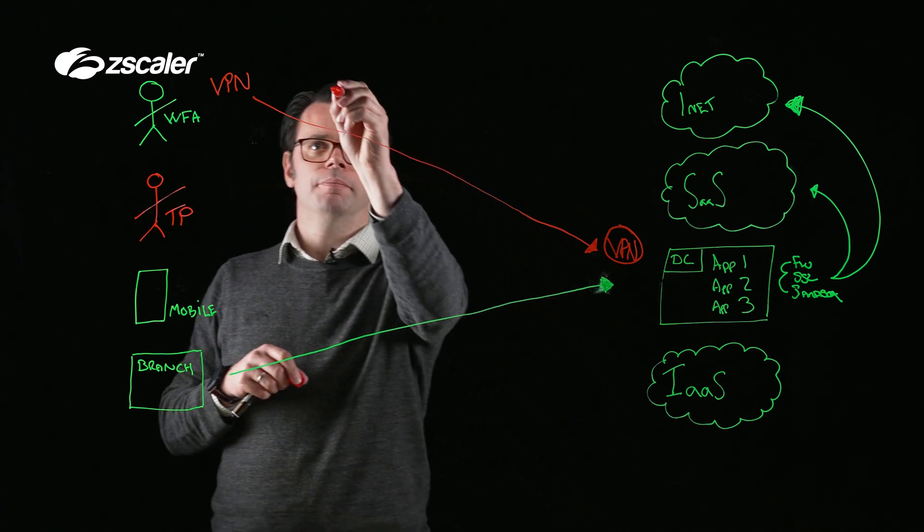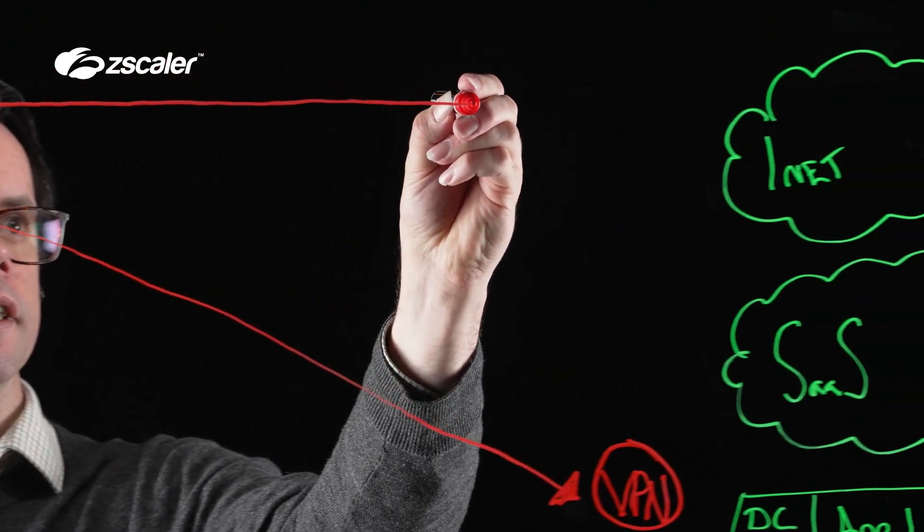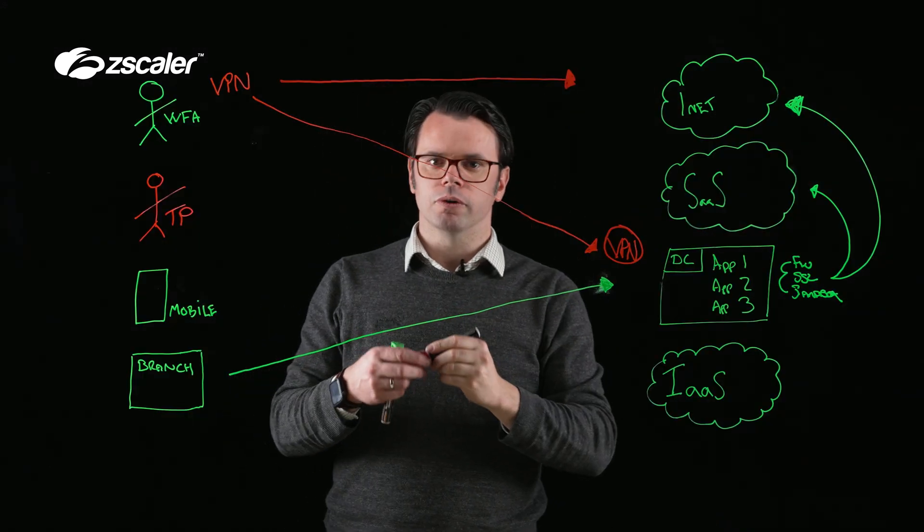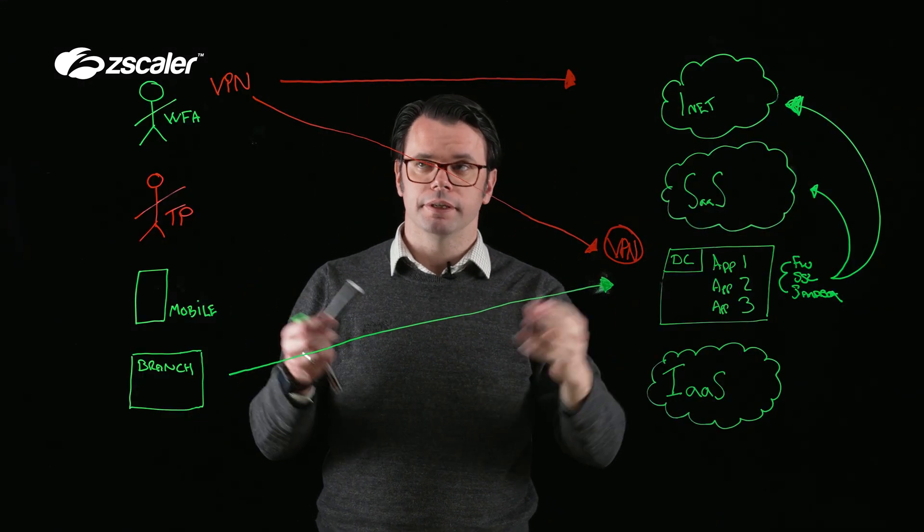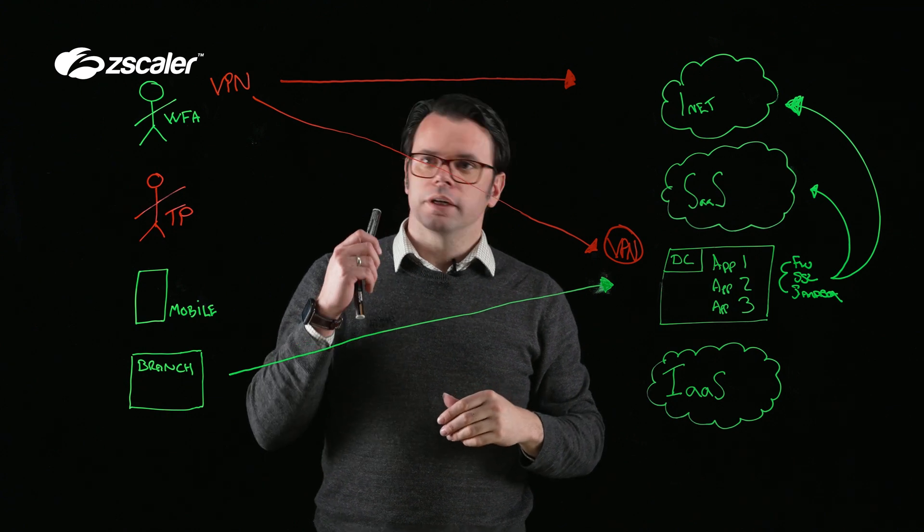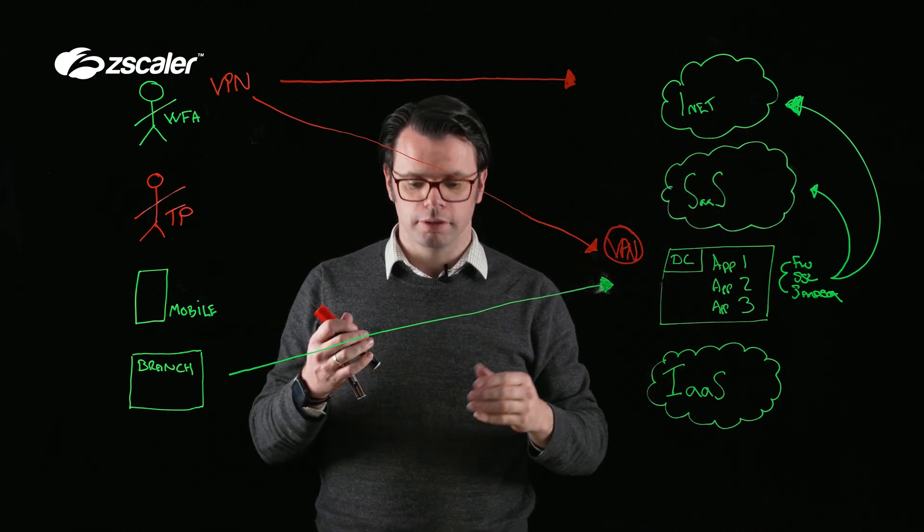Traditionally, the option that some companies would take would be to split tunnel out certain traffic and send that directly. But obviously, you've got no controls over that traffic, you've got no visibility. So I'm going to take away some of this and we'll talk about how the Zero Trust Exchange can do this.